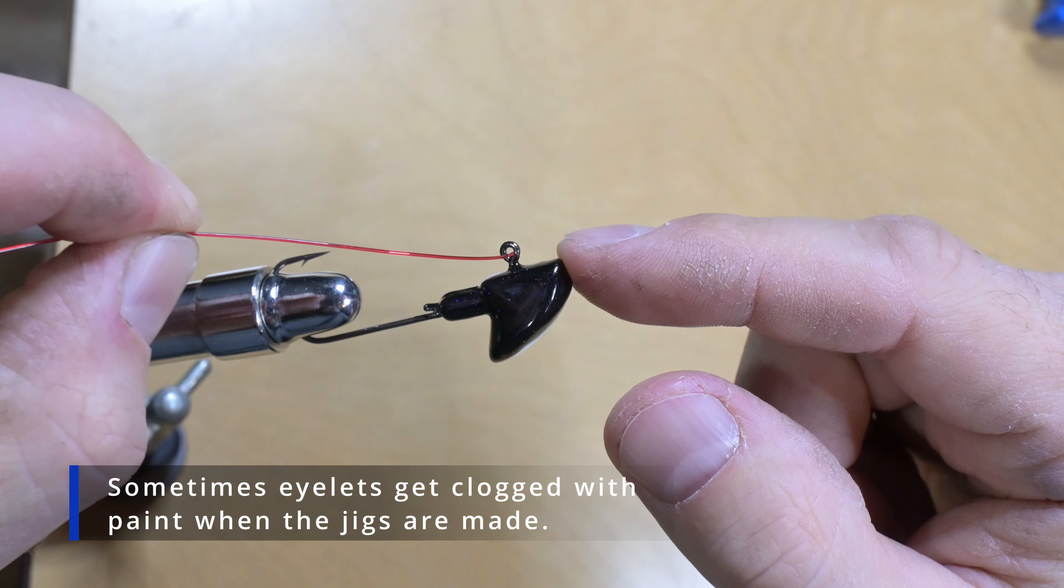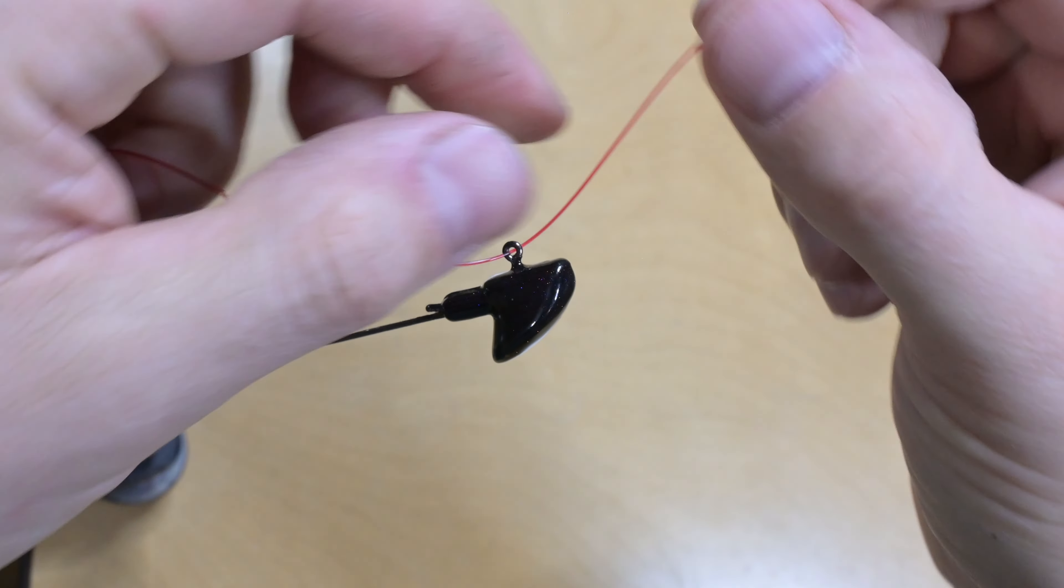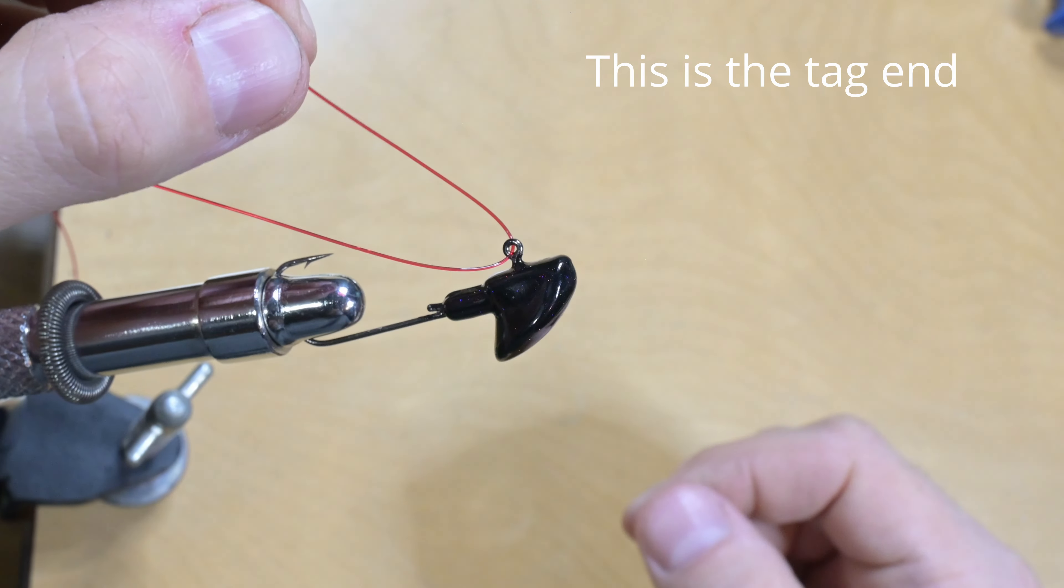Take your fishing line, run the line through the eyelet, and pull out a decent sized tag end.